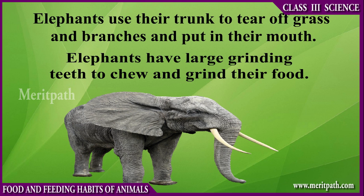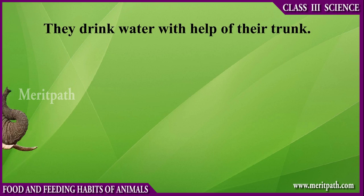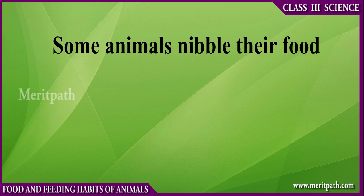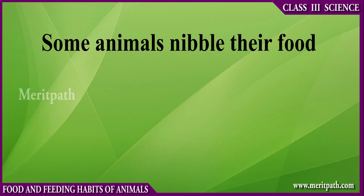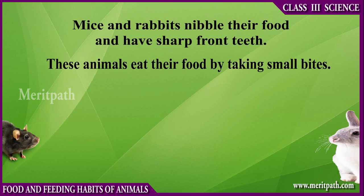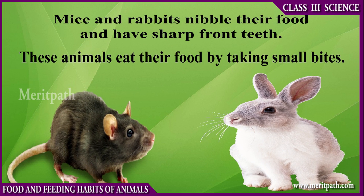Elephants have large grinding teeth to chew and grind their food, and they drink water with the help of their trunk. Some animals nibble their food, such as mice and rabbits. They have sharp front teeth and eat their food by taking small bites.